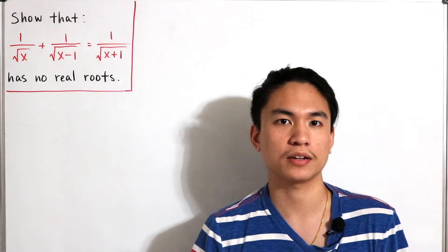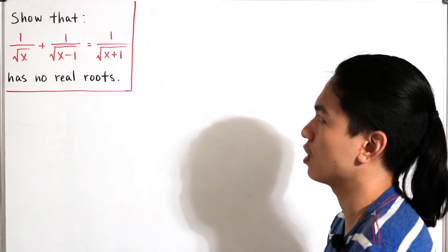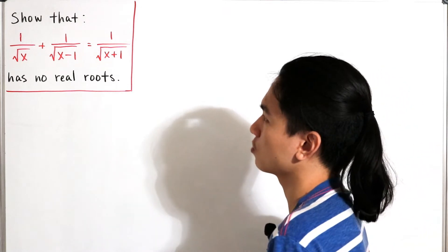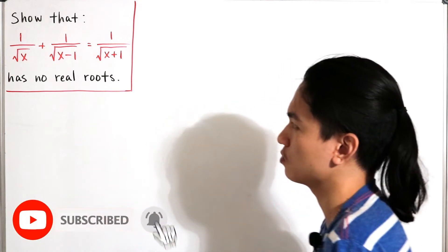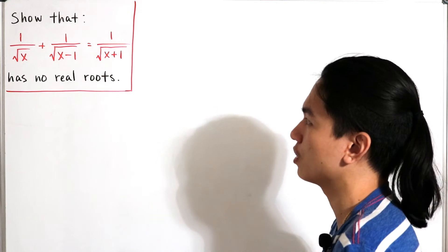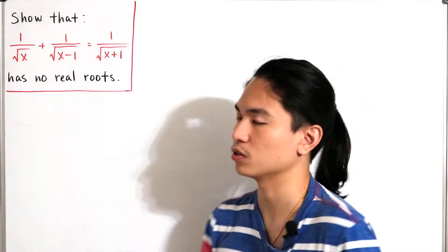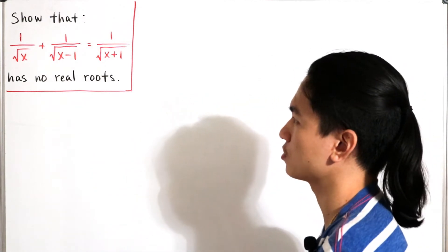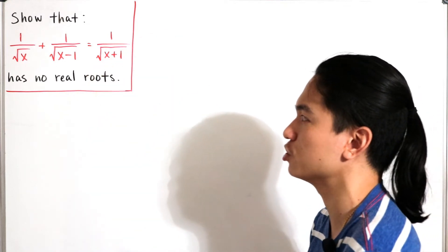Welcome back to another video. We have an analysis problem where we are asked to show that 1 over the square root of x plus 1 over the square root of x minus 1 equals 1 over the square root of x plus 1 has no real roots. Real numbers are the key factor here — we're looking at whether there are no real number solutions that satisfy the equation.